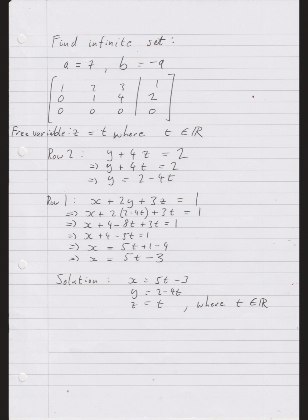Now let's find the infinite solution set. This only exists when a is seven and b is minus nine, so this is what the augmented matrix looks like. I have zeros all along the last row, so it's like having only two equations for three variables — the free variable case. I'll say z is my free variable, equal to t, where t is any real number. Then I go back through my rows and solve them with z equal to t.